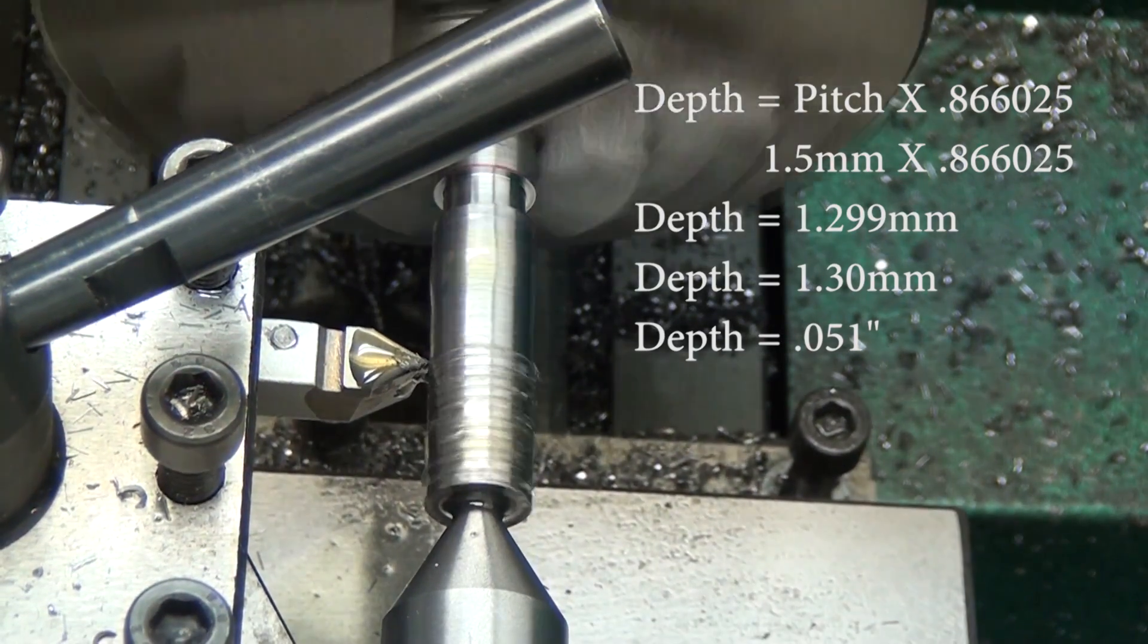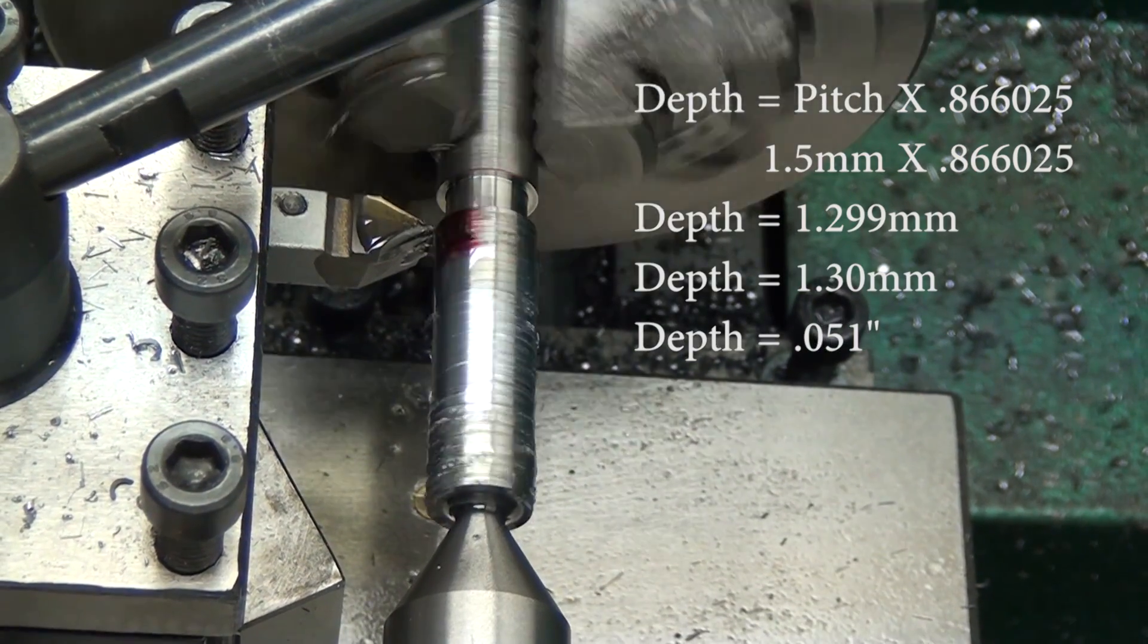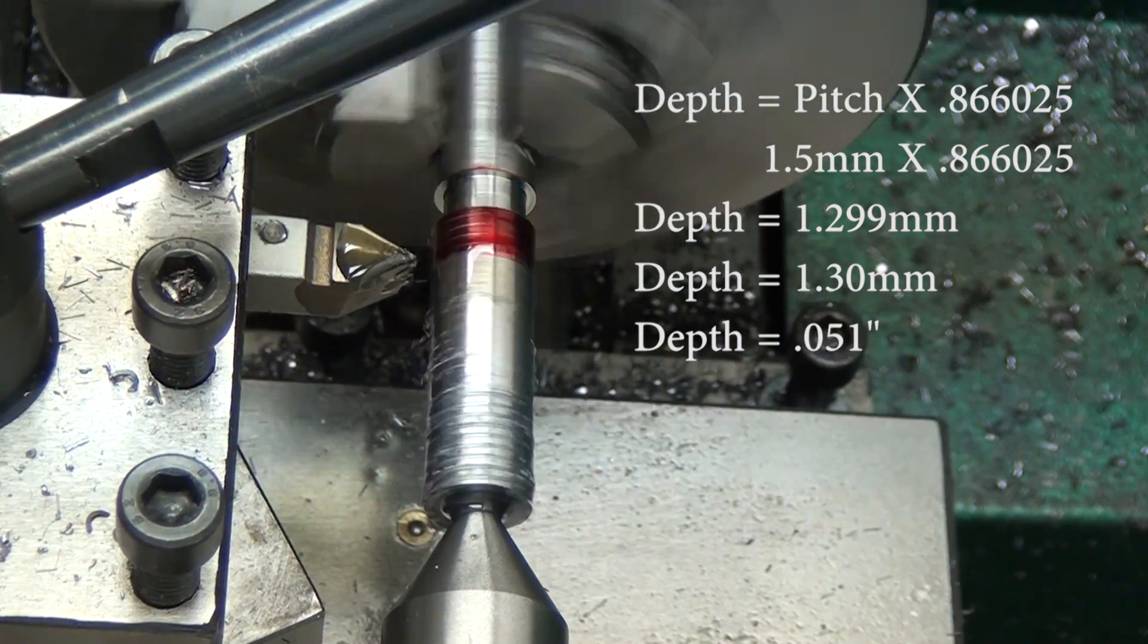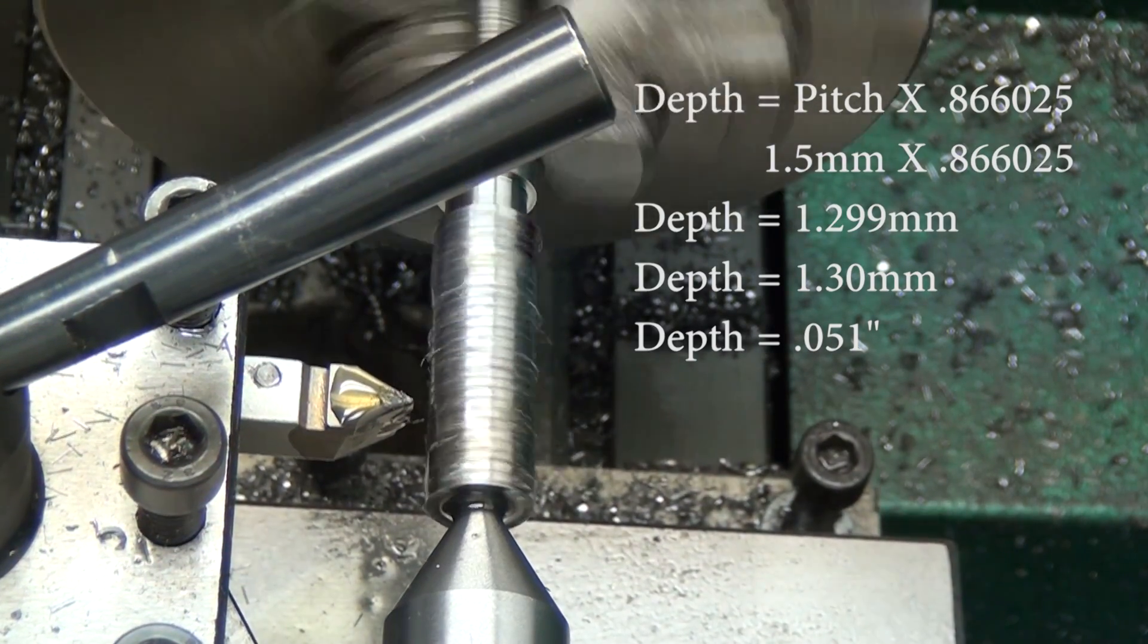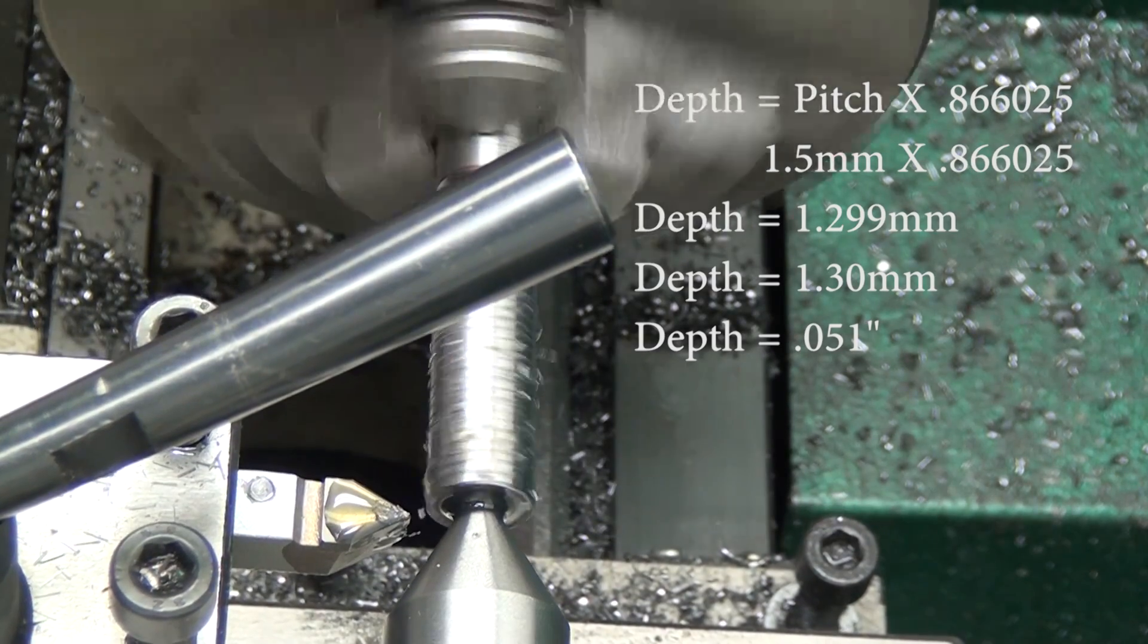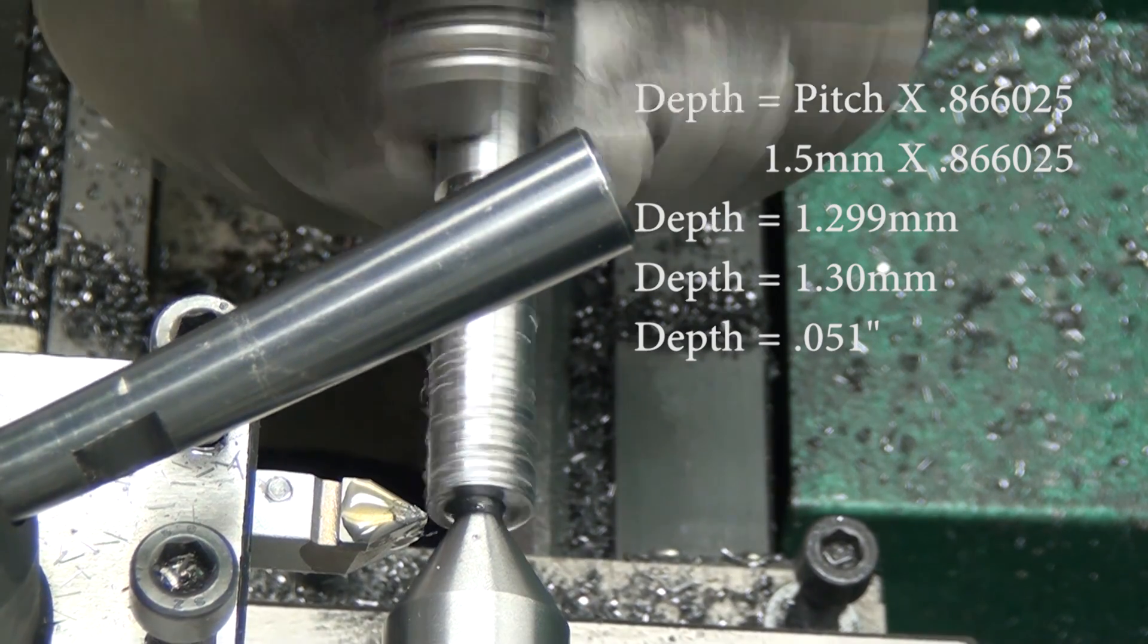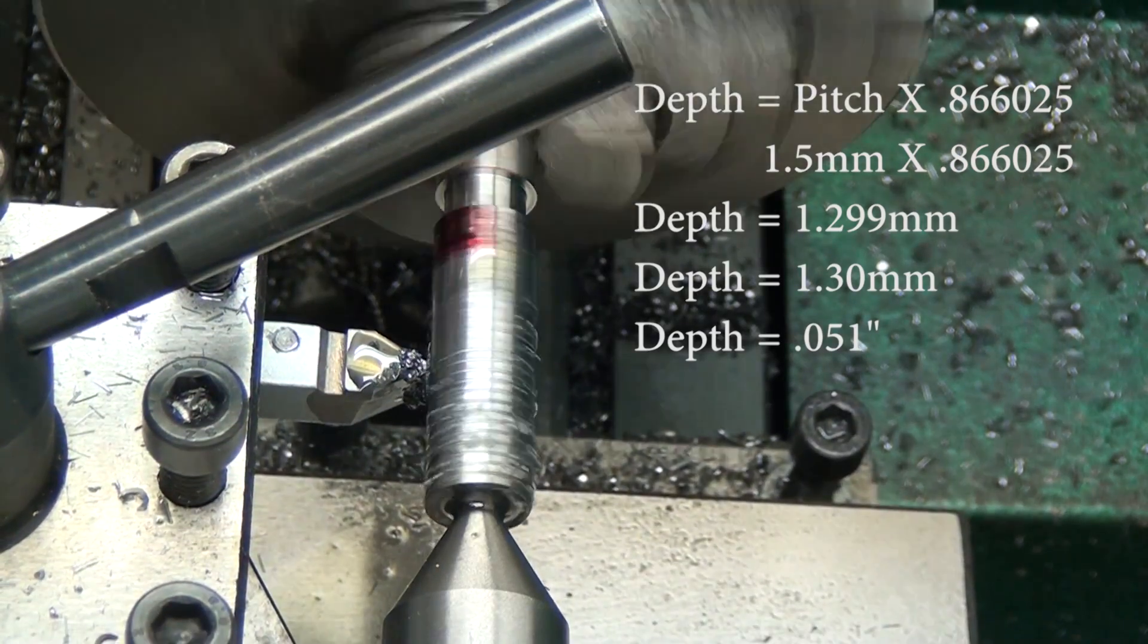Then throw the lathe back in forward for the second pass. You can see in the formula at the top right—I found that by searching the internet. Your pitch multiplied by the 0.866025 multiplier; all 60-degree V threads use that multiplier. That gives me a final depth of cut at 51 thousandths. I converted it to thousandths because that's how my brain works. You could probably do less than five thousandths depths of cut—in fact, in the future I might even do three. I would not do more than five.